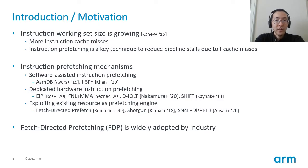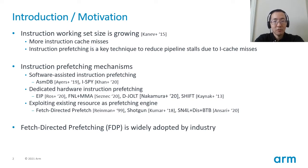First of all, I want to talk about the background of this work. As you know, instruction working set size is growing rapidly and it is causing extra instruction cache misses. To avoid pipeline stalls due to instruction cache misses, many instruction prefetching techniques were proposed. These prefetching techniques include software approaches, dedicated hardware approaches, or exploiting existing resources like branch predictor as prefetching engine. For the hardware approach, Fetch-Directed Prefetch is widely adopted by industry.